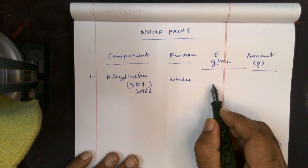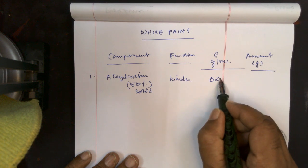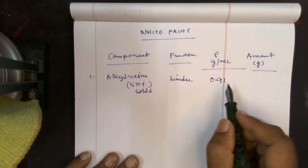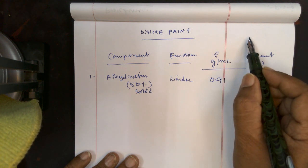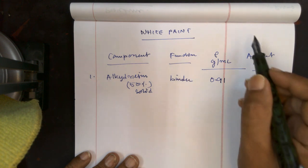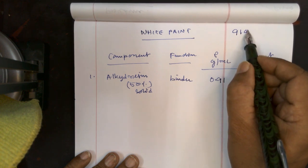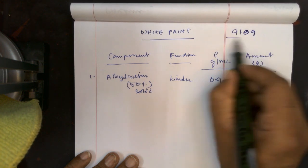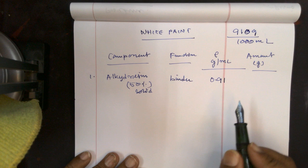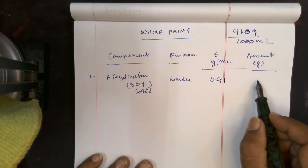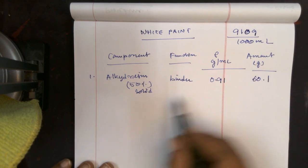And its density is mass by volume, that is weight by volume, 0.91. It means when I take 1000 ml, it will have 910 gram. So that gives you 0.91 density. And I have taken the weight as 60.1 in gram.